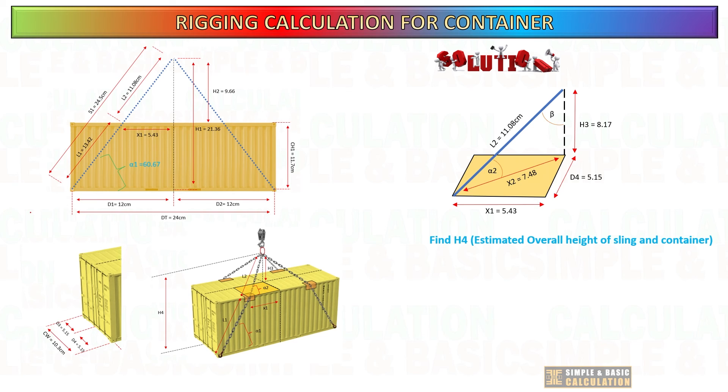After getting the H3, which is the height of the sling on top of container, we can now determine the overall height of sling plus container. Please remember to add the master link length also in your calculation.